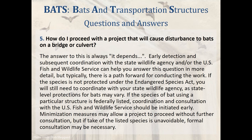Question 5: How do I proceed with a project that will cause disturbance to bats on a bridge or culvert? The answer always depends on circumstances. Early coordination with the state wildlife agency and/or U.S. Fish and Wildlife Service can help answer this in detail. If the species is not protected under the Endangered Species Act, you will still need to coordinate with your state wildlife agency, as state-level protections for bats may vary. If the bat species using a particular structure is federally listed, coordination and consultation with the U.S. Fish and Wildlife Service should be initiated early. Minimization measures may allow a project to proceed without further consultation, but if take of the listed species is unavoidable, formal consultation may be necessary.